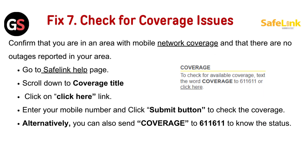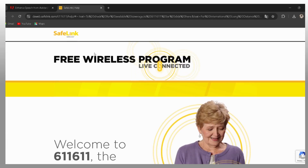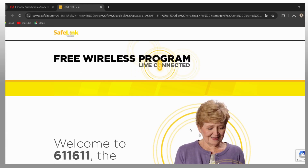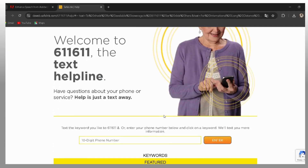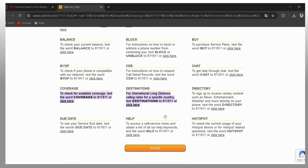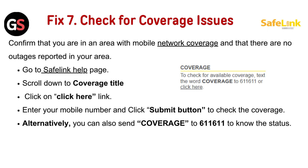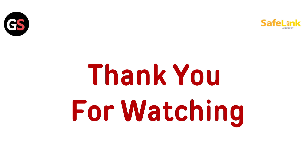Fix 8: Check for coverage issues. Confirm that you are in an area with mobile network coverage and that there are no outages reported in your area. Go to the Safelink help page, scroll down to the coverage title, click on the click here link, enter your mobile number, and click the submit button. Alternatively, you can also send 'coverage' to 611611 to know the status. Thank you for watching.